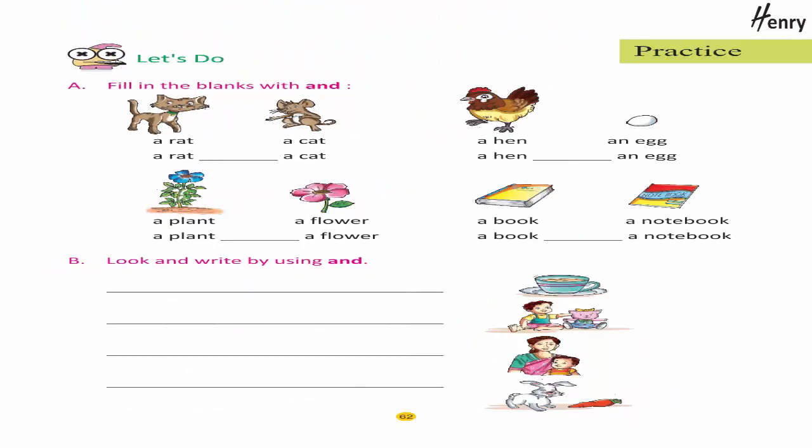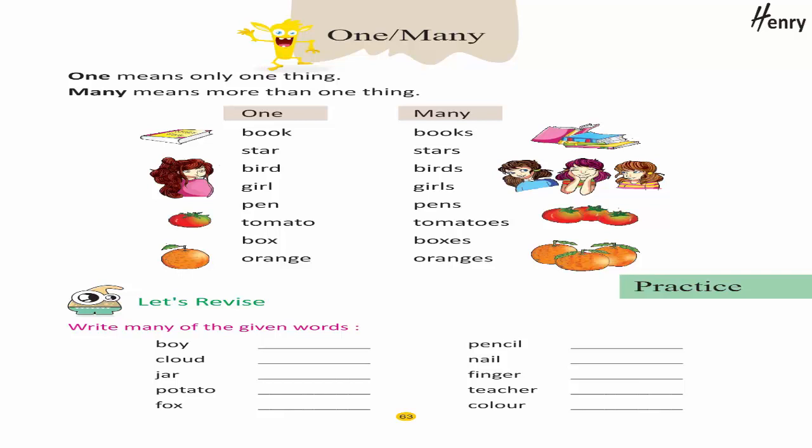Practice: let's do — fill in the blanks with 'and'. One and many: One means only one thing. Many means more than one thing. Book — Books. Star — Stars. Bird — Birds. Girl — Girls. Pen — Pens. Tomato — Tomatoes. Box — Boxes. Orange — Oranges. Practice: let's revise — write many of the given words.